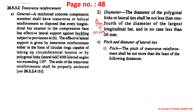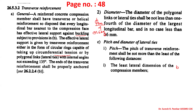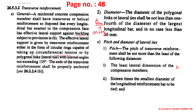The pitch of transverse reinforcement shall not be more than the least of the following: first, the least lateral dimension (generally b); second, 16 times the smallest diameter — for example, if we have 25 mm bars and four bars of 20 mm, we consider the smallest, giving 16 into 20; third, 300 mm. We must provide the least of these three values as the pitch.